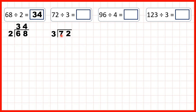Well, 6 is in the 3 times table, and 2 times 3 is 6, so 2 is the tens digit of our answer. But 2 times 3 is only 6, and we have 7. To get to 7 from 6, we need 1 more. So that tells us we have a remainder of 1 when dividing the tens digit, and we write the remainder 1 in front of the next digit. So 7 divided by 3 is 2 remainder 1, because 2 times 3 is 6 and then we need 1 more to get to 7.